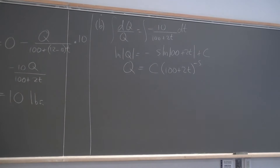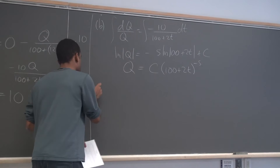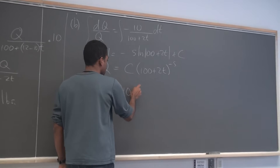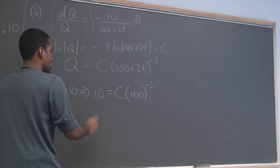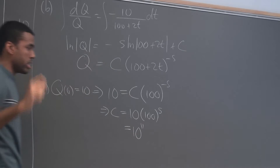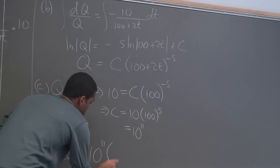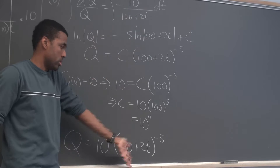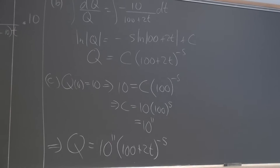That gives you the general solution. For part c, finding the particular solution, you apply the initial condition. Q(0) = 10 means Q is 10 when t = 0. This gives C = 10 × 100^5, which in scientific notation is roughly 10^11. So the particular solution is Q(t) = 10^11 × (100 + 2t)^(-5). If you simplified a common factor of 2, that would also be fine.